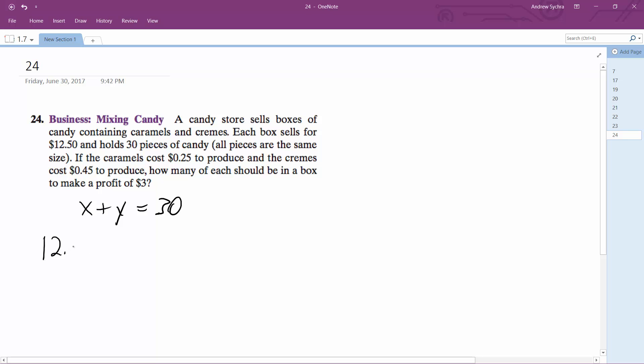12.50 minus 0.45x minus 0.25y is equal to 3. So however many caramels, and then however many creams, and then subtract that from 12.50, and we still make $3 out.